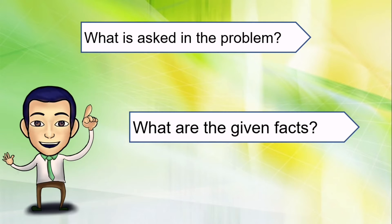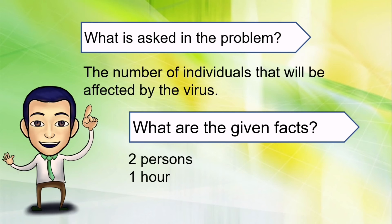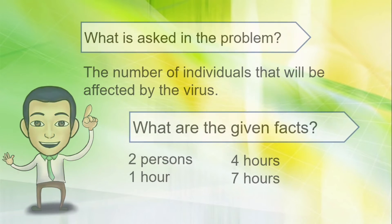So, what is asked in the problem? The number of individuals that will be affected by the virus. What are the given facts? Two persons, one hour, four hours, and seven hours. After analyzing the given problem, let's try to solve the problem.